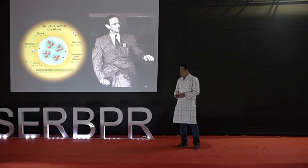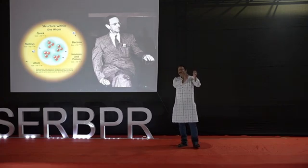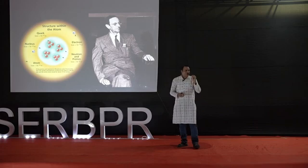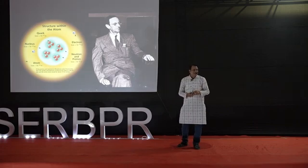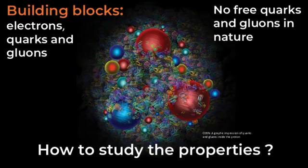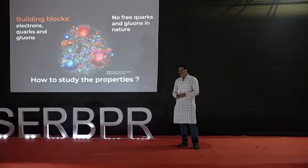Scientists started bombarding protons with highly energetic electrons and figured out that the proton itself is made up of still smaller particles — the quark and gluon. So what are the building blocks of our universe? All that you see is mostly electrons, quarks, and gluons.